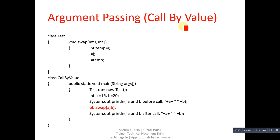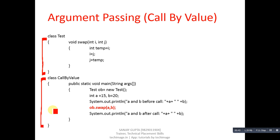For this purpose I have implemented a program. In this program there are two classes: the first one is Test and the second one is CallByValue class. When you save and compile this program, you will receive two bytecode files: Test.class and CallByValue.class.